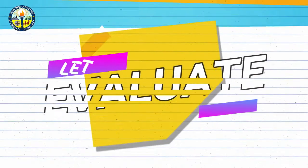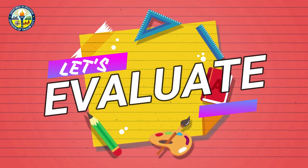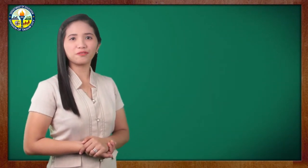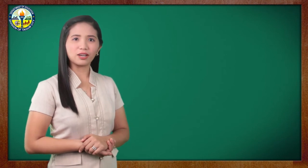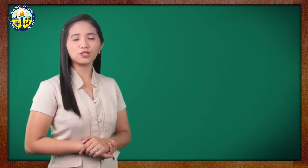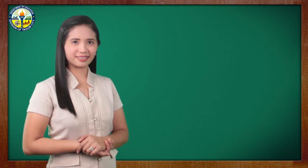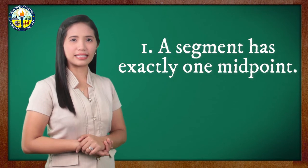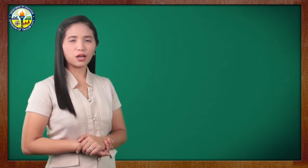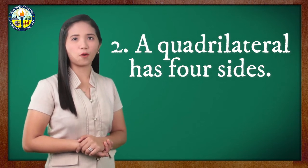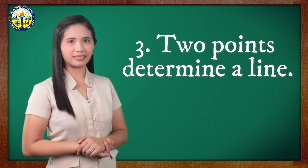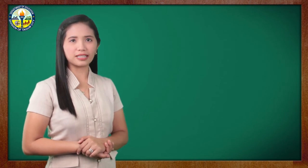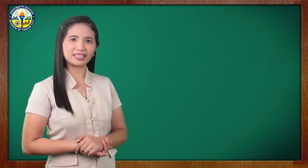Now let us check your understanding. Transform the following statements to their corresponding if-then form and identify the hypothesis and conclusion of each. Number one: a segment has exactly one midpoint. Number two: a quadrilateral has four sides. Number three: two points determine a line. I will give you three minutes to answer. Your time starts now!